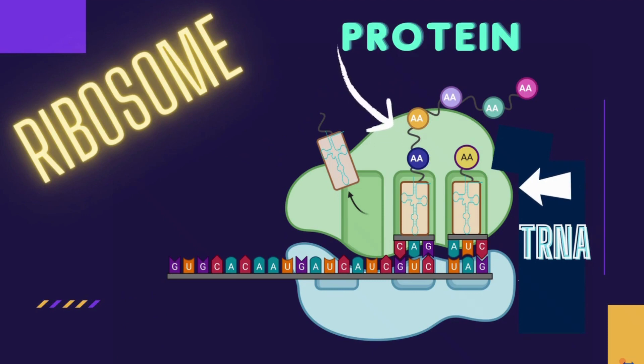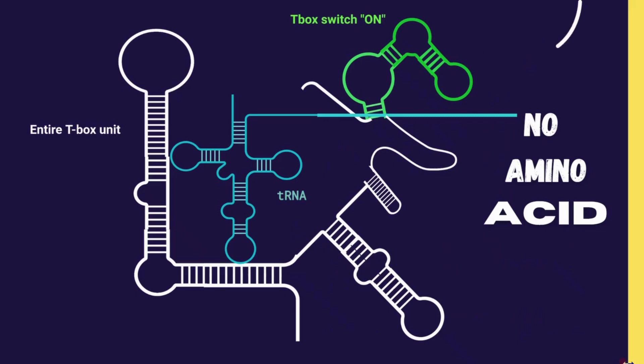The ribosome then combines all of the amino acids from the tRNAs into a protein. A t-box is an RNA element that exists in bacteria cells. It monitors tRNAs.